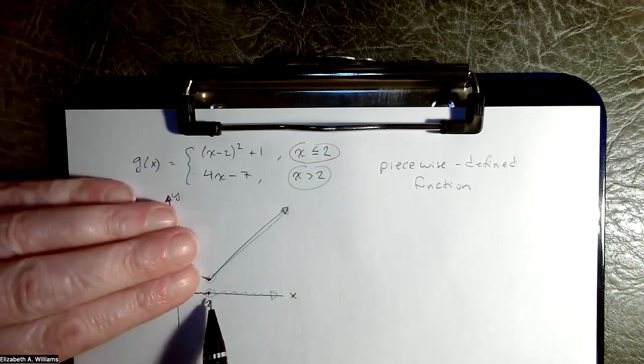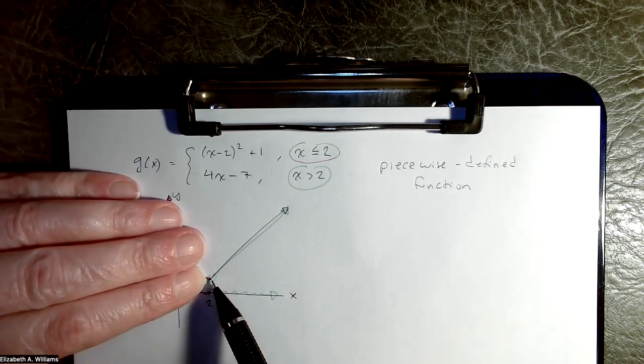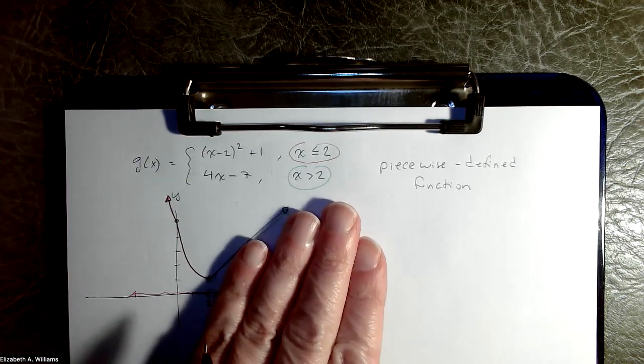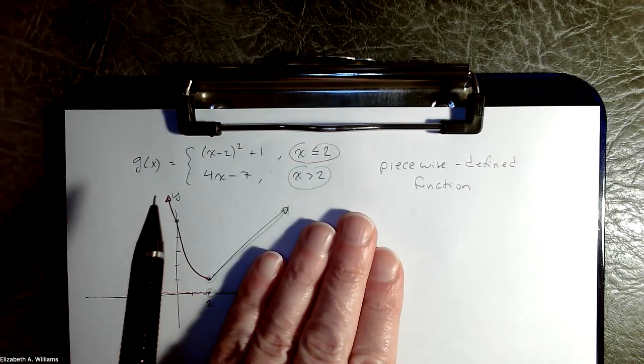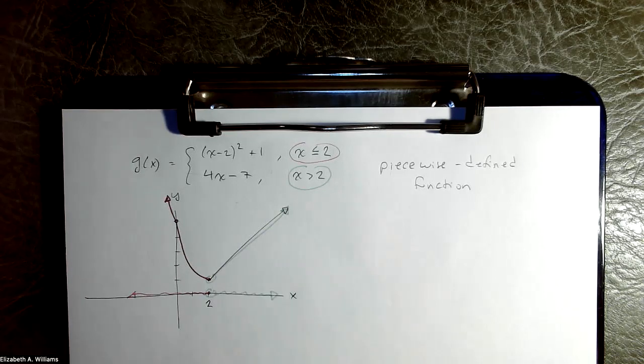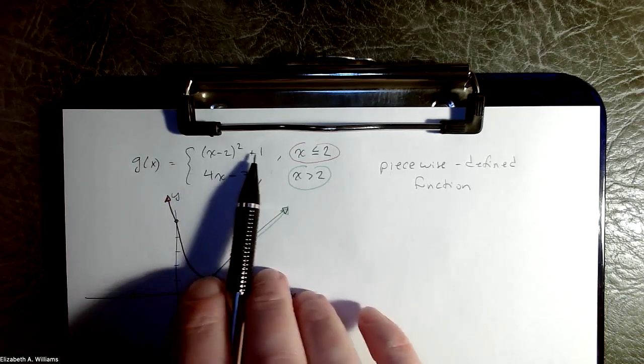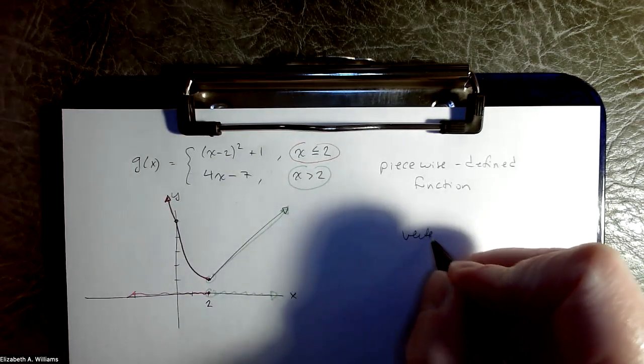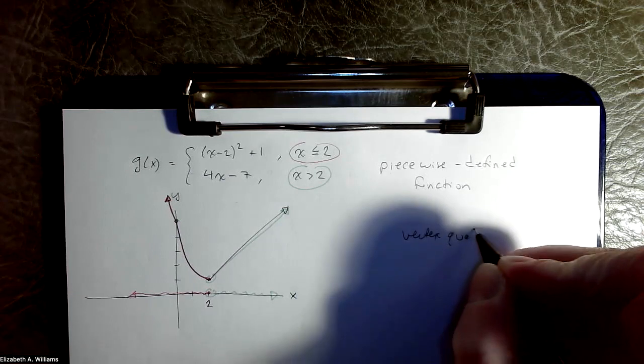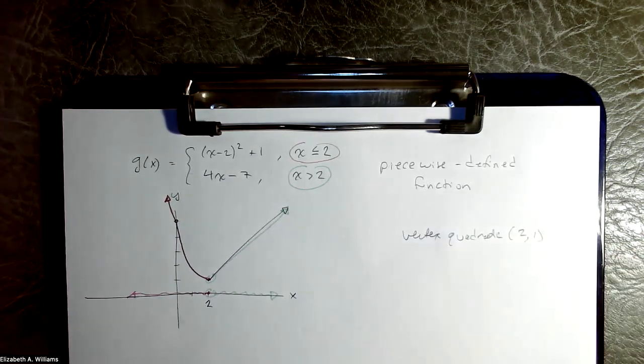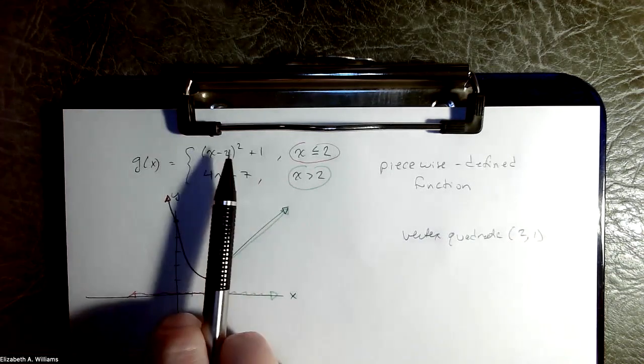And so that means, okay, if your x's are bigger than two, you draw that straight line. If your x's are less than two, you draw that bit of the quadratic. And because they put the quadratic bit into completed square form, I know that the vertex of the quadratic is at two comma one. So I can read that off this format.